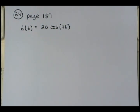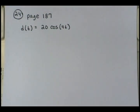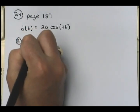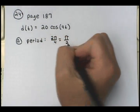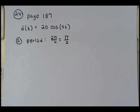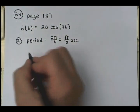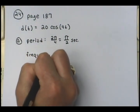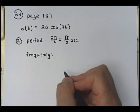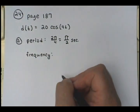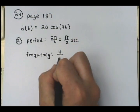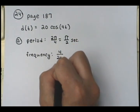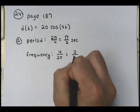Part A asks: what is the period and what is the frequency of the motion? The period is 2π divided by 4, which equals π/2 seconds. The frequency is b over 2π, so it would be 4 over 2π, which equals 2 over π.